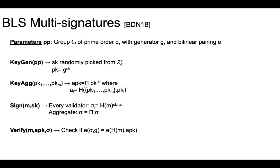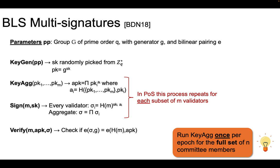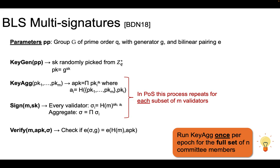The observation here is that all the operations in key aggregation and signing will have to be repeated for every subcommittee — every subset of M validators formed to sign a new block. Our inspiration was whether we could design a protocol that pays the expensive part of the key aggregation algorithm just once per epoch for the full set of N committee members. The expensive part of key aggregation is actually this exponent series. To highlight the difference from the original BLS scheme, I will keep the original on the left-hand side and show our proposed scheme on the right.